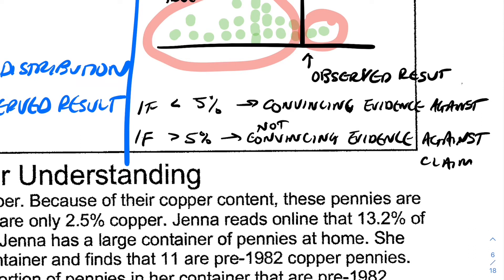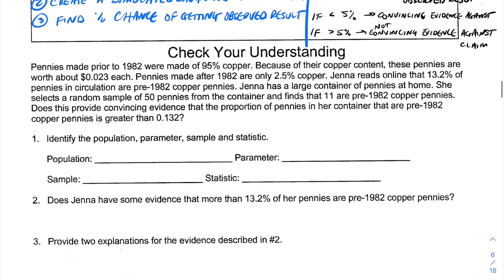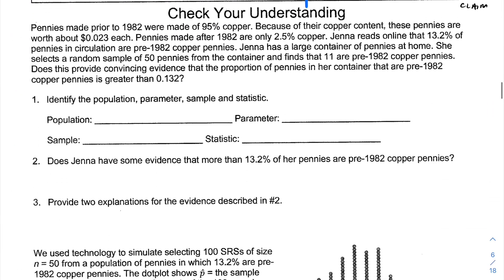So there's a 5% threshold. If my result was unlikely — meaning it happened less than 5% of the time compared to the simulated results — that's going to give me convincing evidence against the claim. Let's look at this example. Make sure that you try this on your own and then come back and watch my explanation.